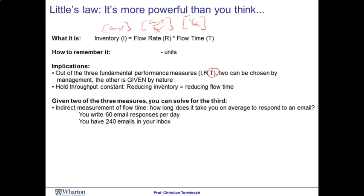Let me give you an example. Think about how long it will take you on average to respond to your email — this is really not a number that most of us routinely track. However, you can compute it quite easily. If you have 240 emails in your inbox, that is an inventory. If you're writing 60 emails per day, that's your flow rate. Little's Law tells us that your average flow time is four days. Some emails you might respond to faster, some might take longer, but on average it takes four days to respond to an email.